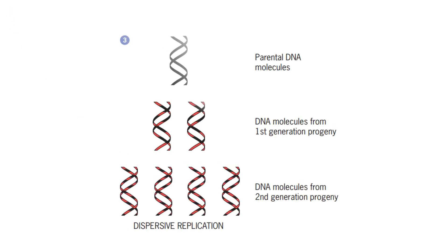In dispersive replication, the material in the two parental strands is distributed more or less randomly between the two daughter molecules. After the first round of replication, the old material is distributed symmetrically between the two daughter molecules, and the same process is repeated in the second round of replication.